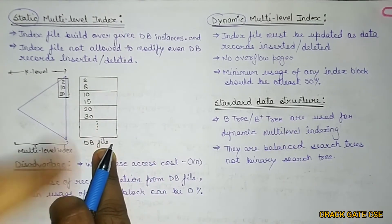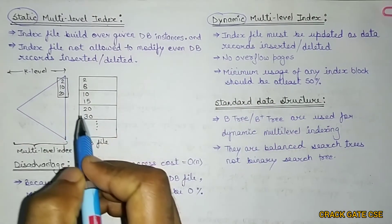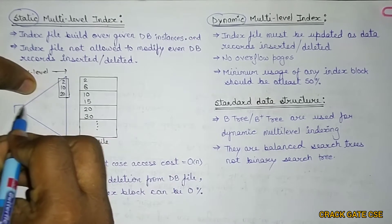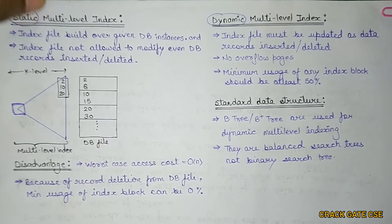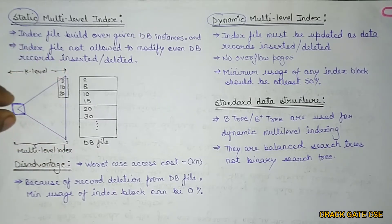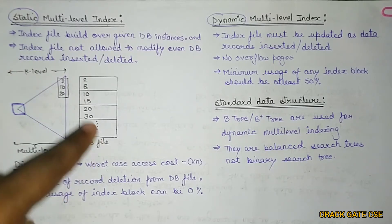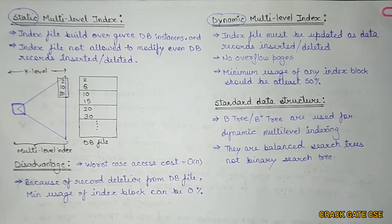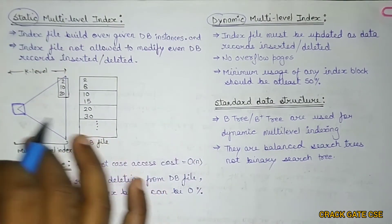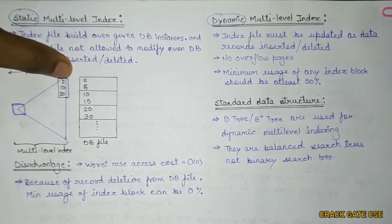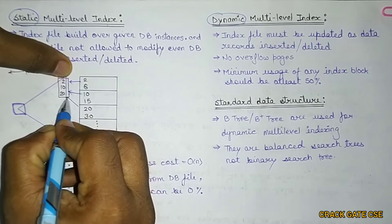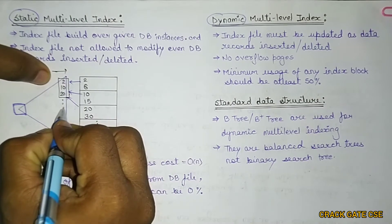Here is a particular database file. We have an index file such that initially the index size will be large, and it will be minimized until we are left with just one block. We keep performing indexing until there is only one particular block. This is the first level index — we will have k levels of indexing. At this first level of index, I am having one entry for each block.